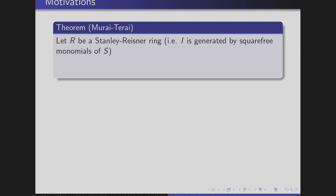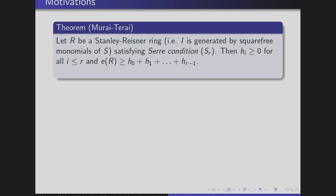The main motivation for this work is a theorem by Murai and Terai that says: if R is a Stanley-Reisner ring — meaning I is generated by square-free monomials — and if R satisfies the Serre condition S_r, then all H_i are non-negative for any i ≤ r. Moreover, the multiplicity of R is at least the sum H_0 + … + H_{r-1}. And if this sum equals zero for i ≤ r, then the ring R must be Cohen-Macaulay.